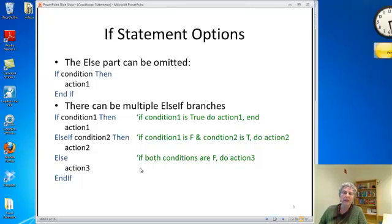Now there are options with an if statement. First of all, you don't have to have an else part. You could just have if the condition, then do an action, and that's it. So nothing happens if the condition is false. Or you can have multiple else if branches. As many else ifs as you want, and optionally you can also have an else which happens if none of the other conditions is true. But this else is optional, just as it is in the shorter form of the if statement.